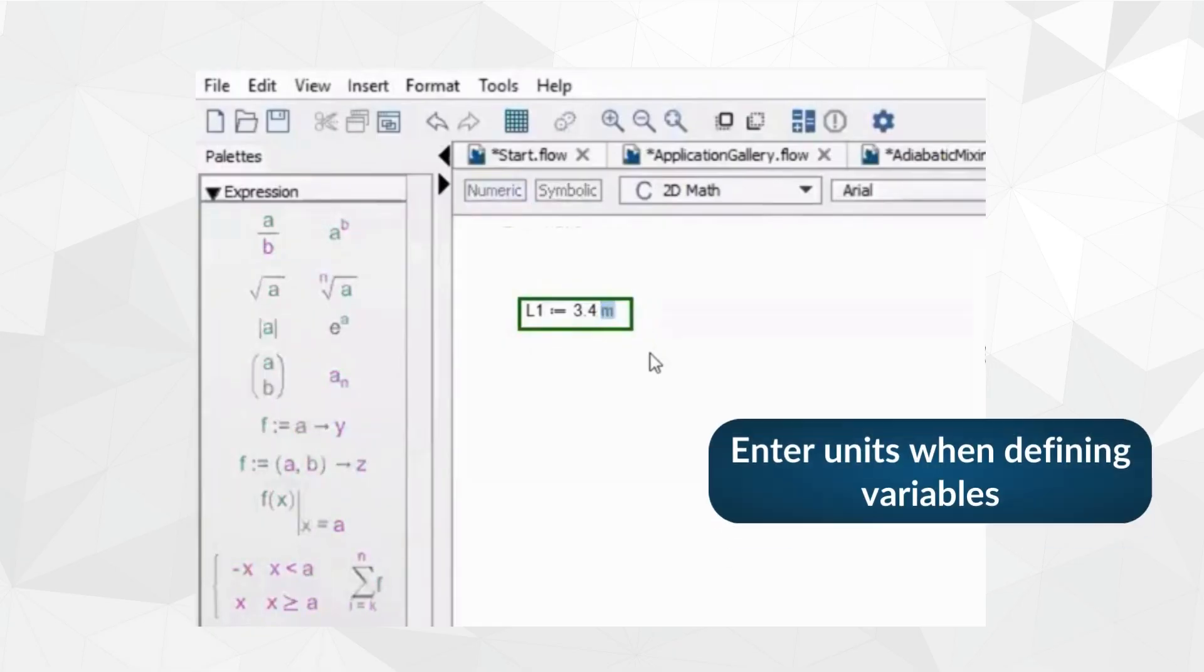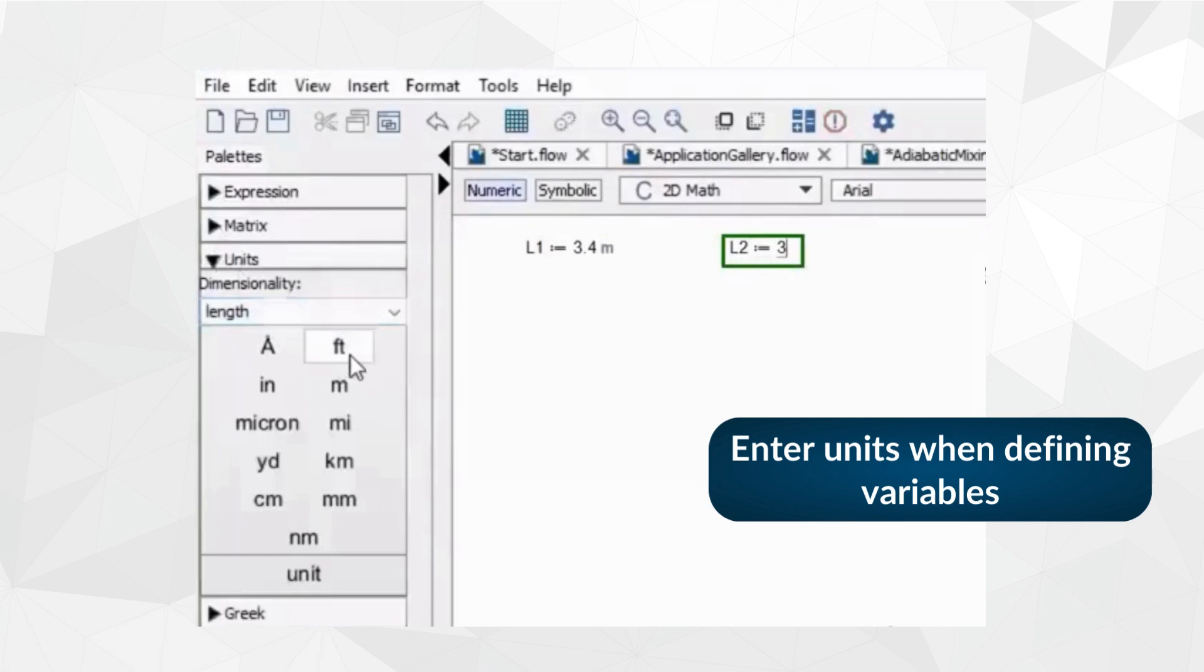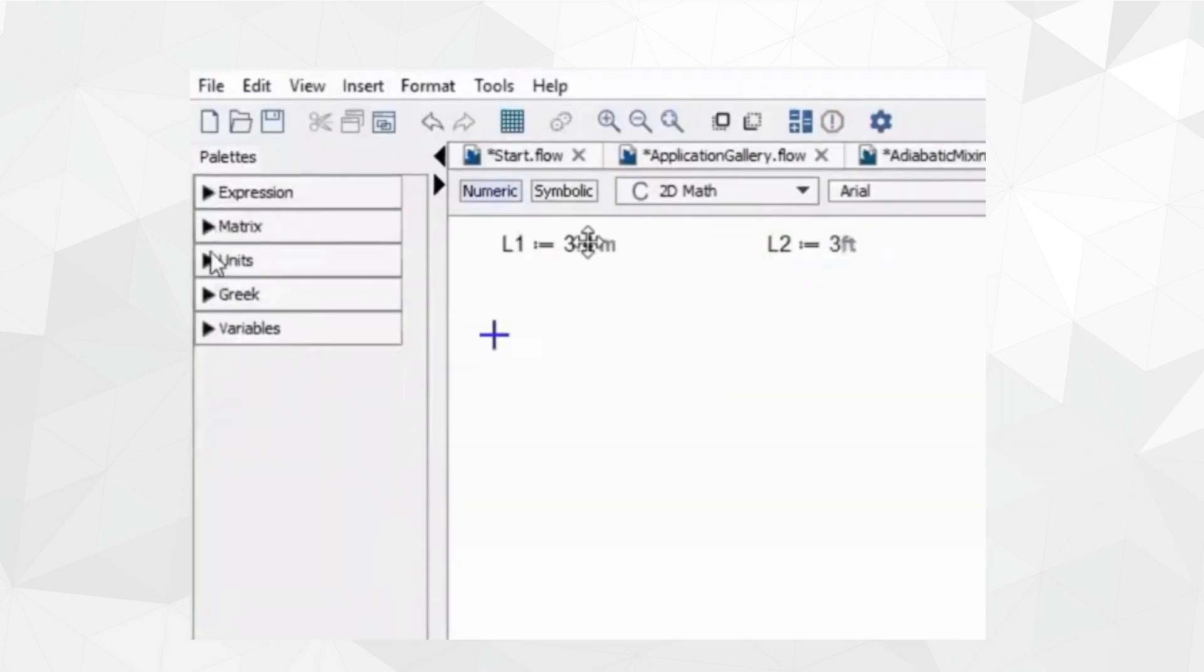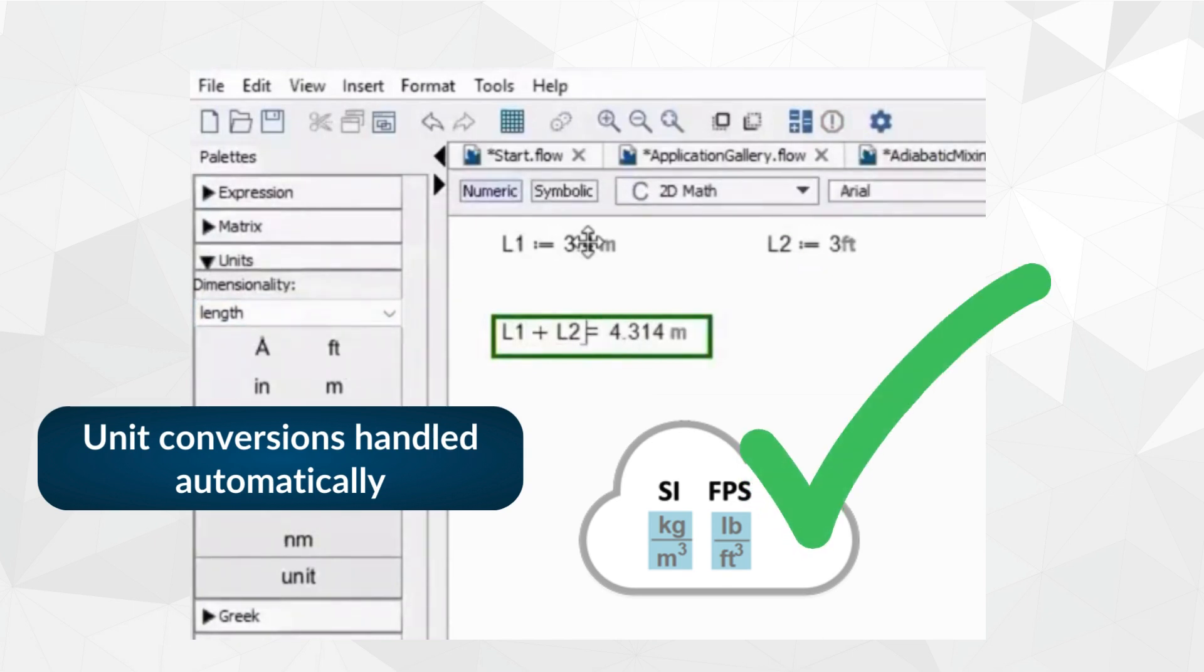MapleFlow also tracks units with the variables. You can enter values in different units, even mixing SI with Imperial, and have the calculation results show in your preferred system of units. This way, the software basically eliminates unit conversion errors, which is a significant benefit.